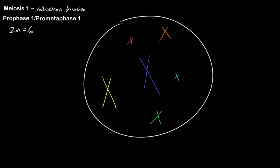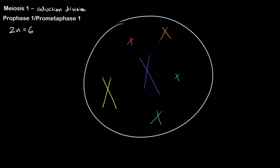Let's look at the first part of meiosis 1, which is prophase 1, and also prometaphase 1. By the end of prometaphase 1, our nuclear envelope is going to be completely disintegrated. You can also see that our chromosomes have begun to coil, and then our kinetochore microtubules start to line up and attach.